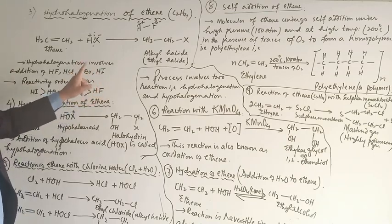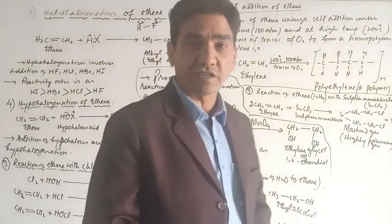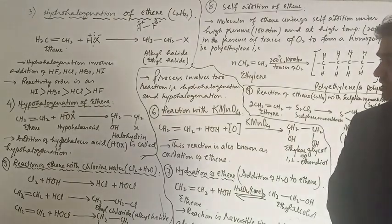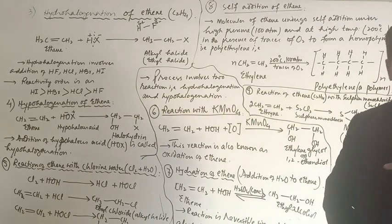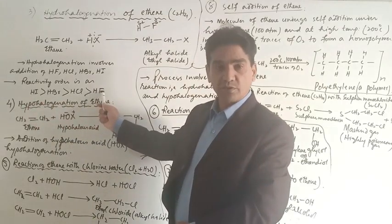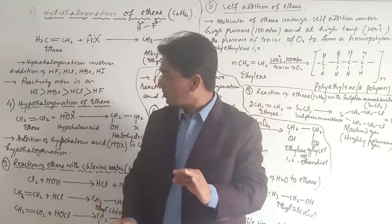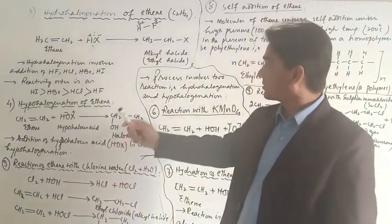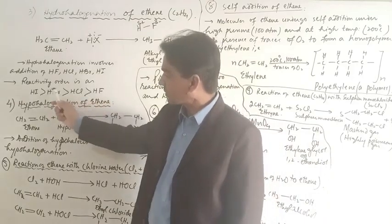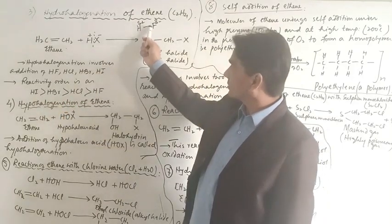Hydroiodination will be the fastest one; hydrofluorination will be the slowest one. The order from fastest to slowest is: hydro iodination, hydrobromination, hydrochlorination, hydrofluorination. This is purely dependent upon the bond strength between hydrogen fluoride, hydrogen chloride, hydrogen bromide, or hydrogen iodide — that is the degree of ionization.